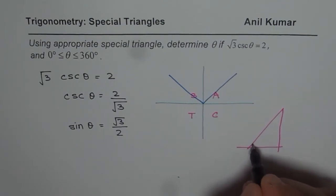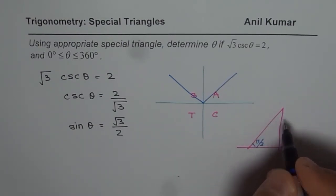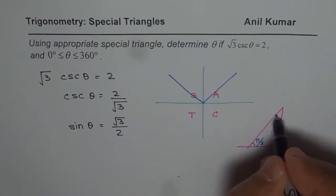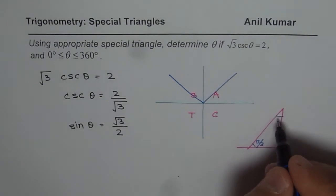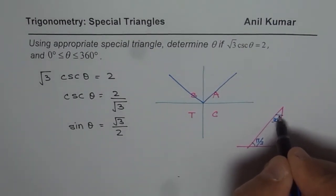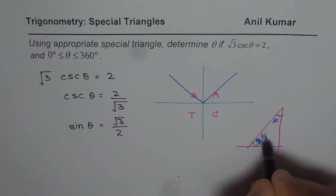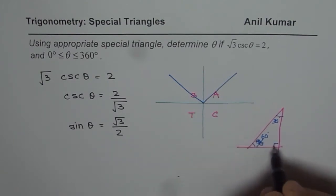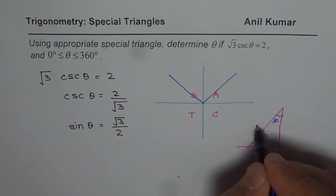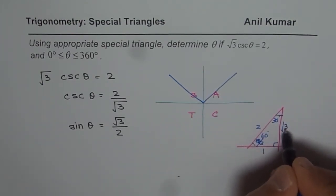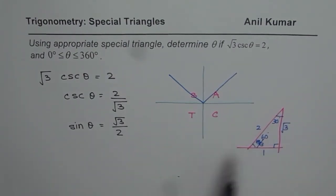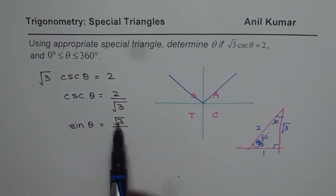In this triangle, sometimes we use radians, but in this case we use degrees—60°, 30°, 90°. The sides are 1, 2, and √3.